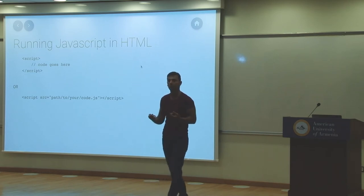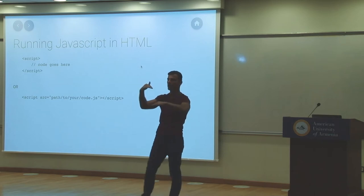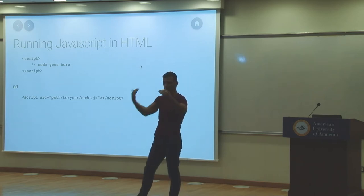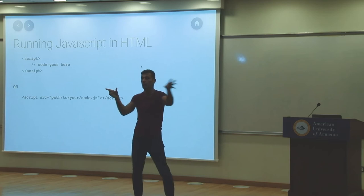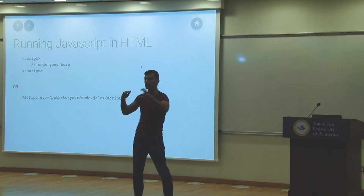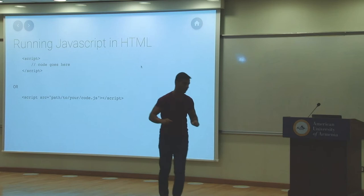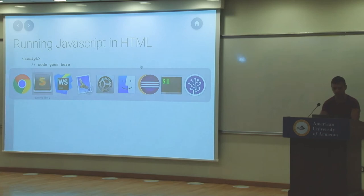Let's go through the exercise of creating an HTML file with script, which is something you'll be doing for homework. Imagine you're creating a brand new file. You put in basic HTML — the head, the body. The body is the stuff that gets rendered. The head is general metadata about the document. The title is what appears in the browser tab.